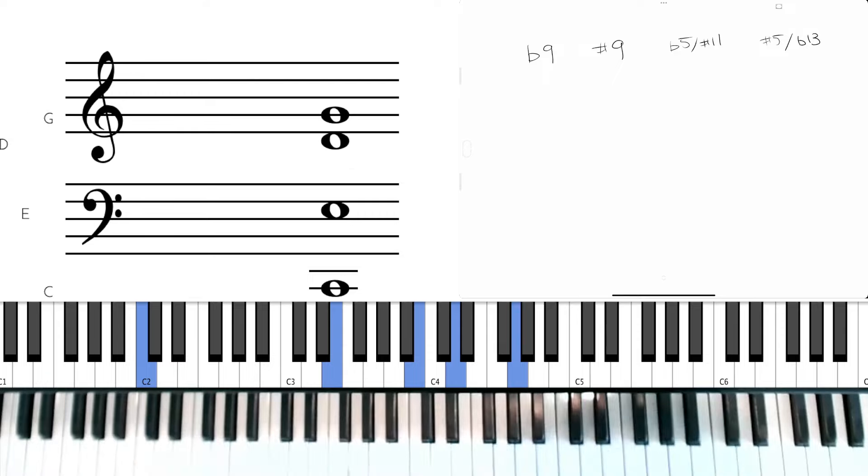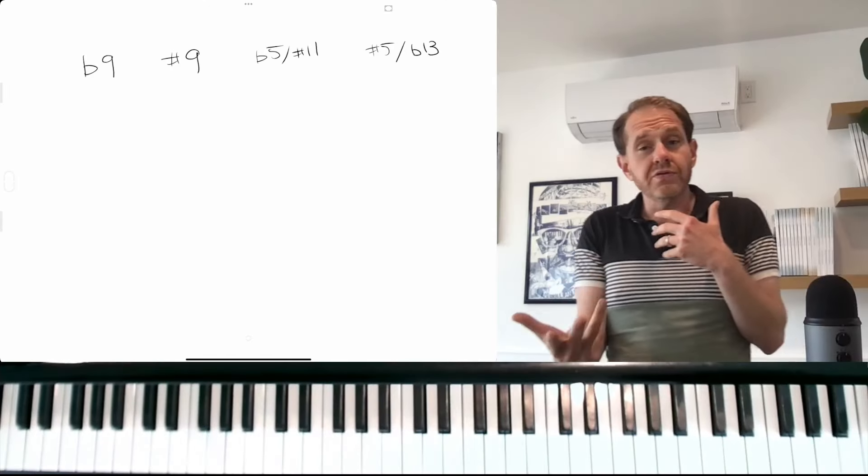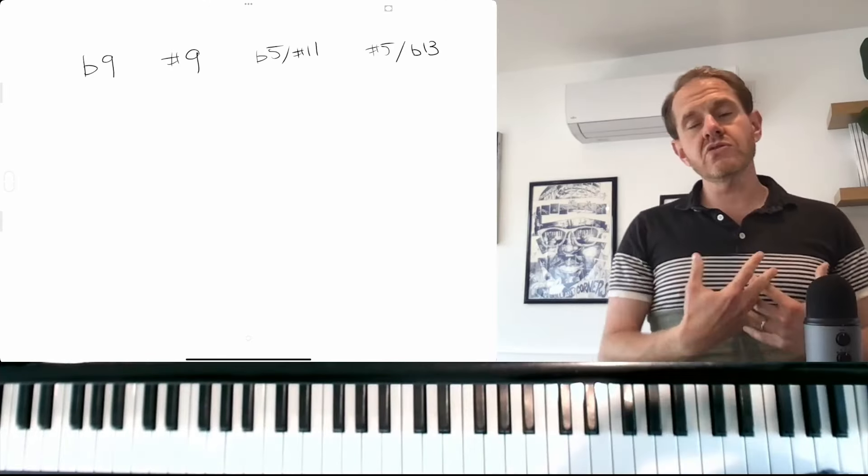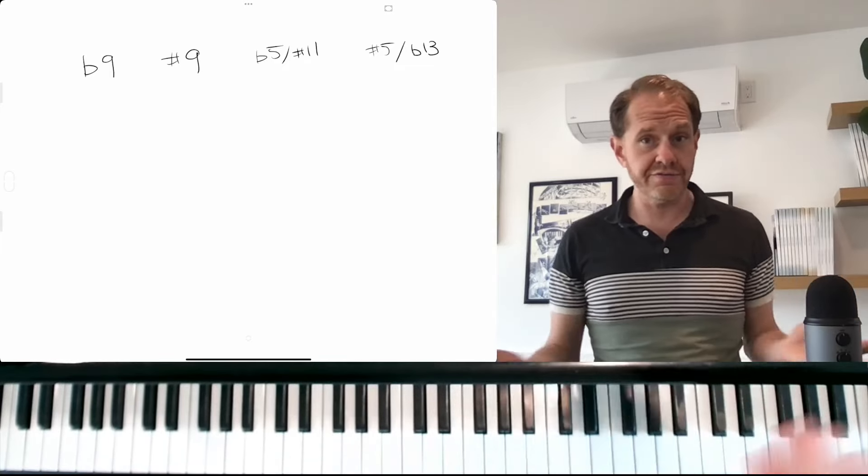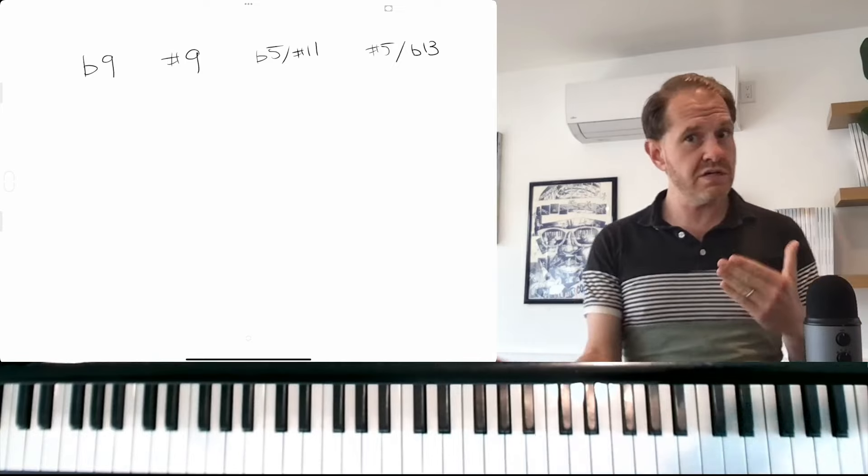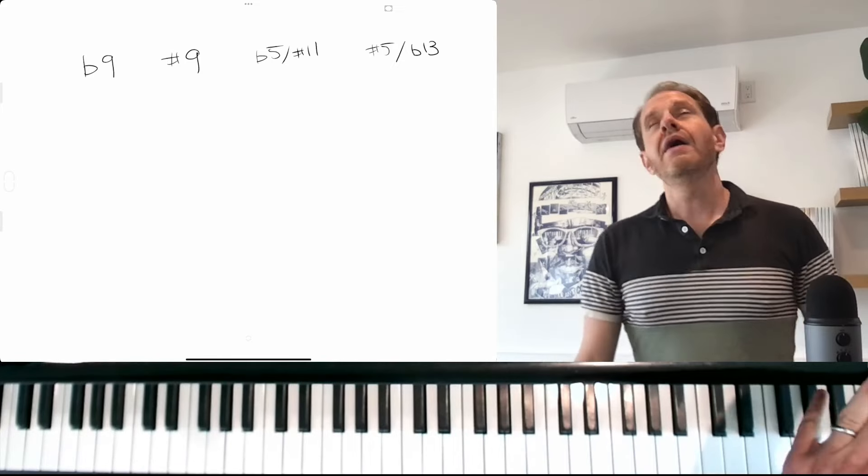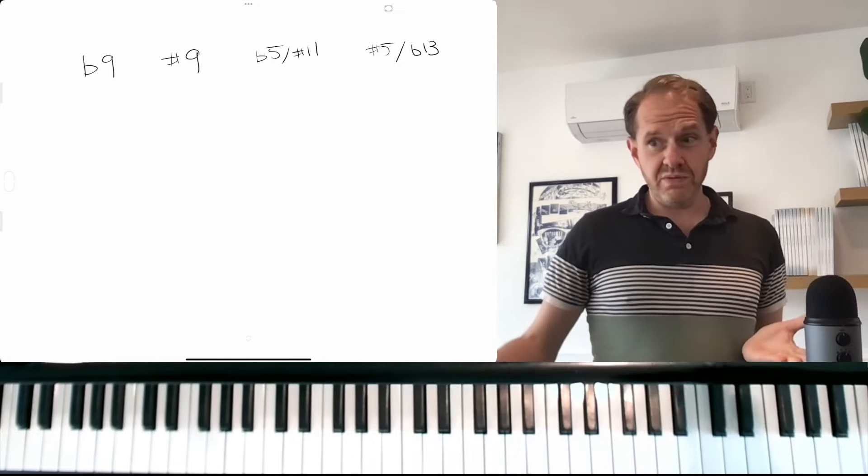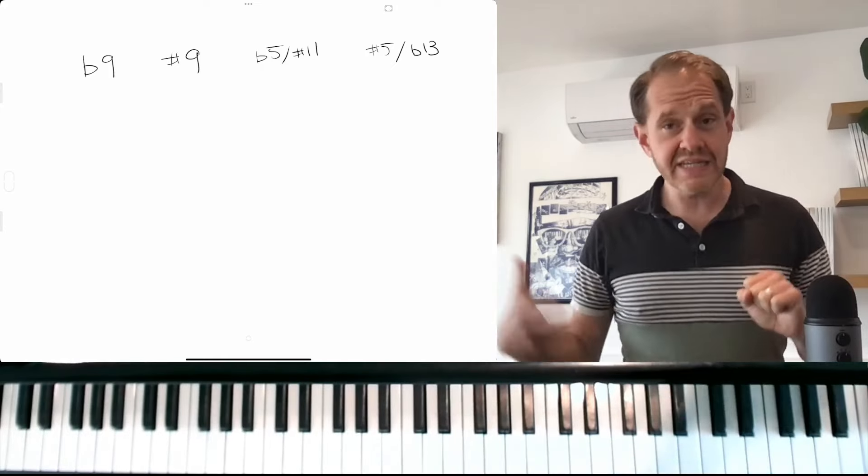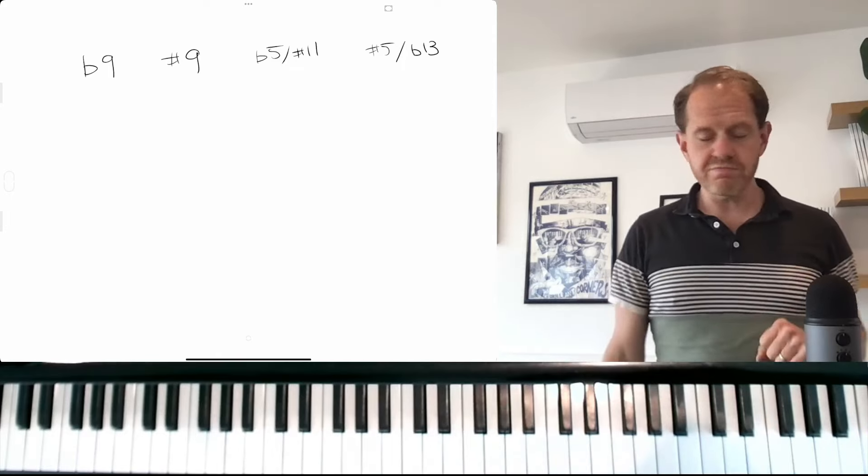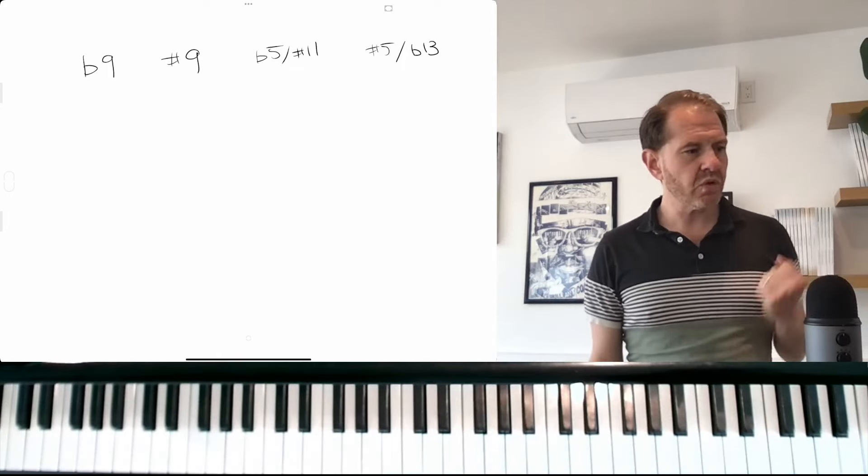And there's really two reasons why these just flow so beautifully. The first one is that these two tones are borrowed from what we would call the parallel minor of C. If we're doing a two five one in C, C minor would be the parallel minor. So the E flat and the A flat are both part of the key signature of C minor.